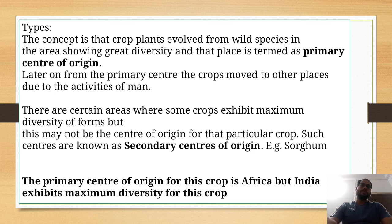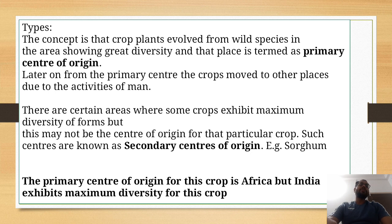Next is the types of center of origin. There are two types: primary center of origin and secondary center of origin. Primary center of origin means the wild species actually originated in this place. But after a few years, due to activities by humans, some genetic diversity is transferred to a new geographical area. After a few years, this new area develops the highest genetic diversity, even higher than the primary center of origin. Then it is called the secondary center of origin. In simple language, primary center of origin means the actual area of origin where wild species originated.